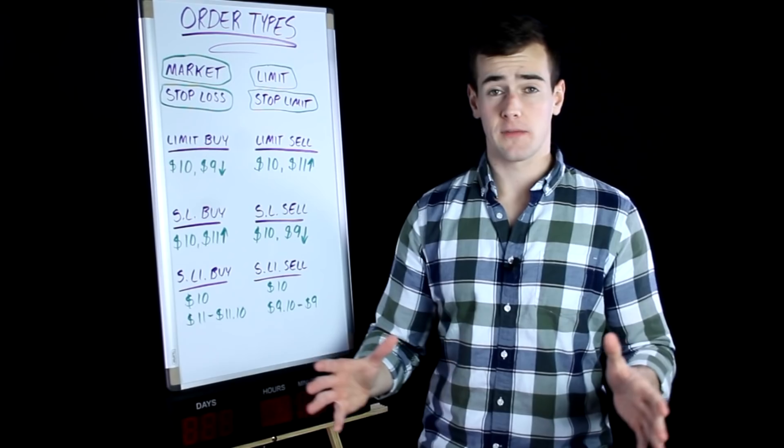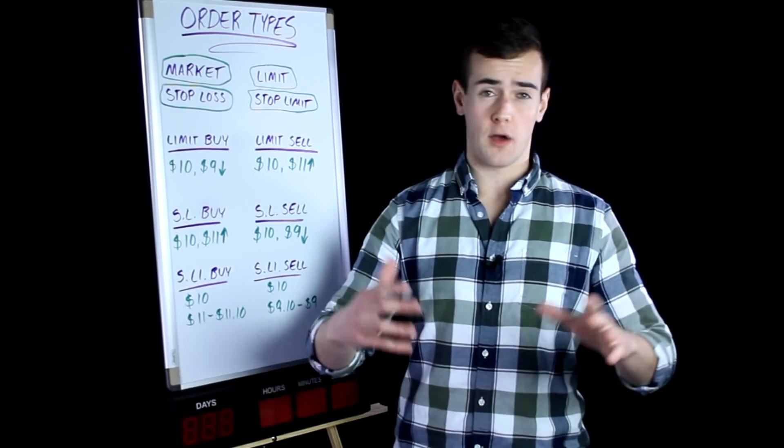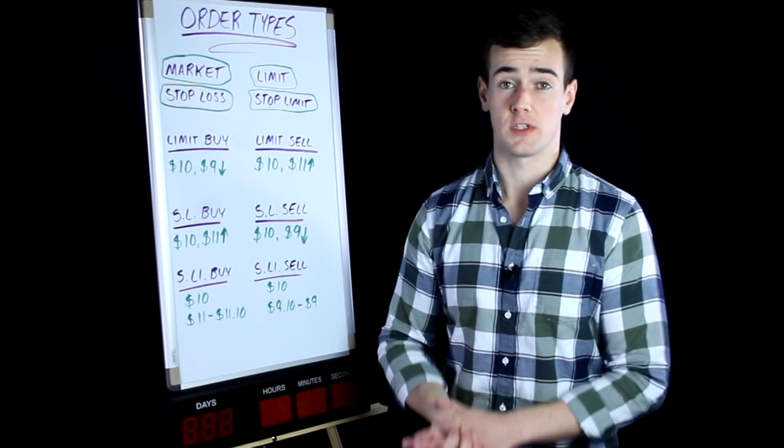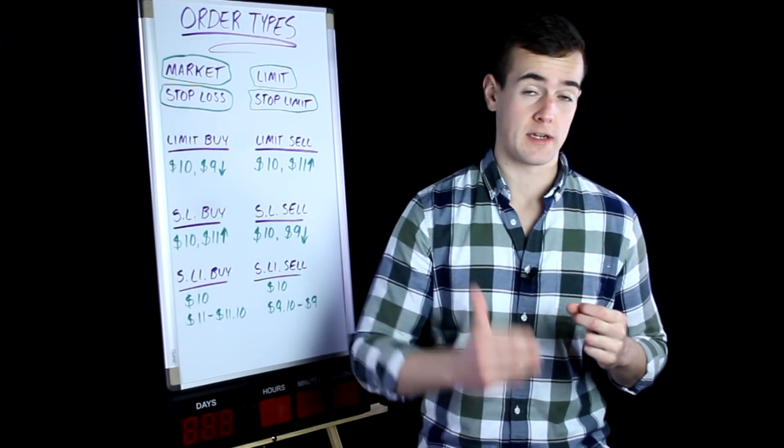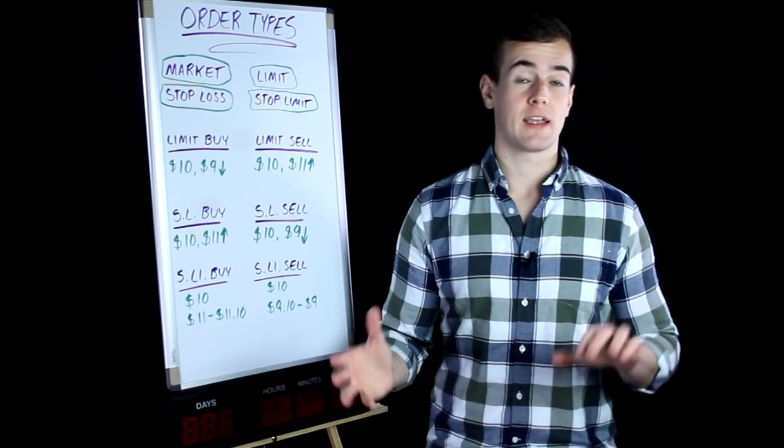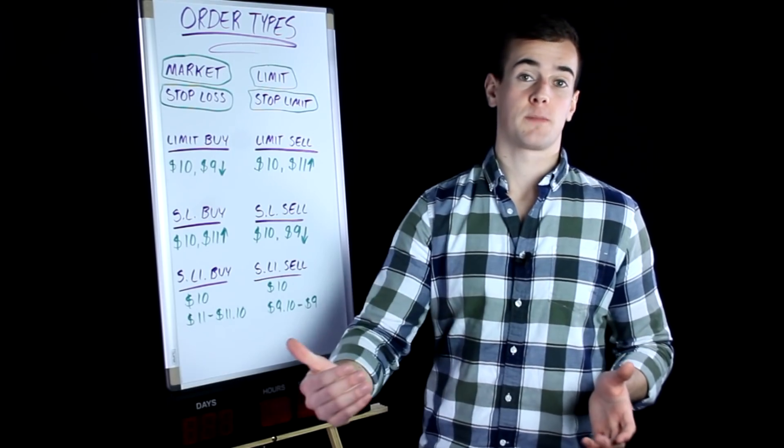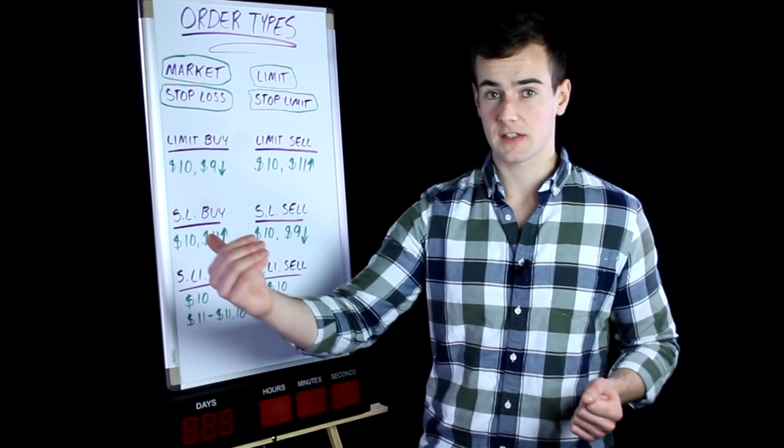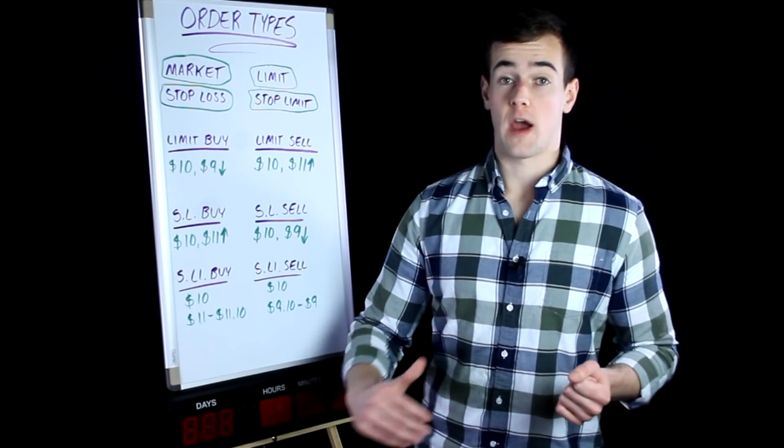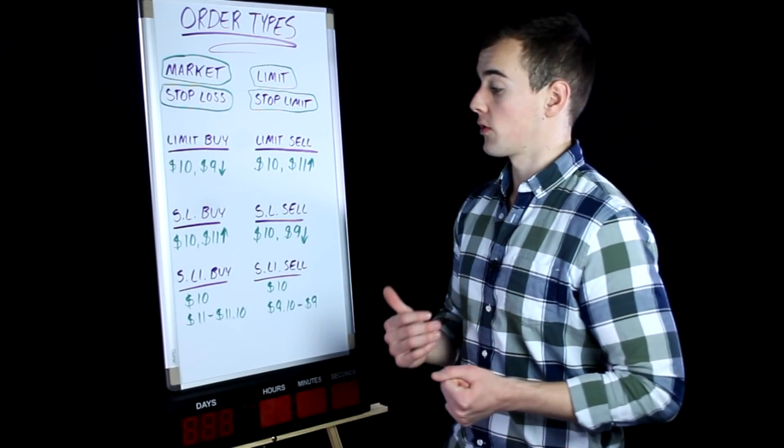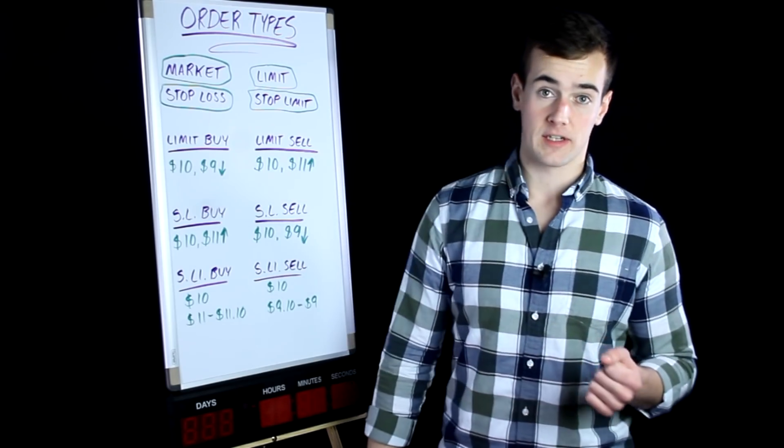Now the stop loss buy is kind of one that people use if they're swing trading. Otherwise, there would really be no reason to use this order. But it's where you're trying to buy this at a higher price than it is right now. So for example, let's say the stock is $10 a share, there is a resistance point at $10.75, and you want to buy it once it hits $11. You could use a stop loss buy order at a price of $11, which means you're going to pay $11 or more for that stock.